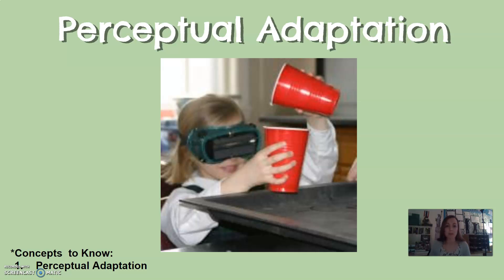Perceptual adaptation is a really interesting ability we have. Here a child is wearing goggles that have changed her visual input — the goggles have flipped her visual input upside down, so she's seeing everything upside down. It's really hard at first, but you will eventually adapt and your brain will adapt so you can operate completely functionally after giving your brain some time to adapt.